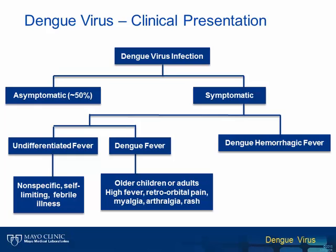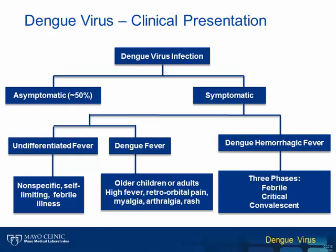Individuals with dengue hemorrhagic fever progress through three different phases, including the febrile phase, which is indistinguishable from dengue fever, followed by the critical plasma leak or hemorrhage phase, which occurs around the time of fever defervescence. Some of the warning signs for progression to plasma leakage include increased capillary permeability, elevated hematocrit, pleural effusion, and hypovolemia. If these signs are noted and vascular permeability is not countered, patients can progress to shock, organ failure, and ultimately death. Finally, for patients who survive the plasma leakage stage, the third phase is the convalescent phase, at which time fluids that have leaked from the intravascular space are reabsorbed.